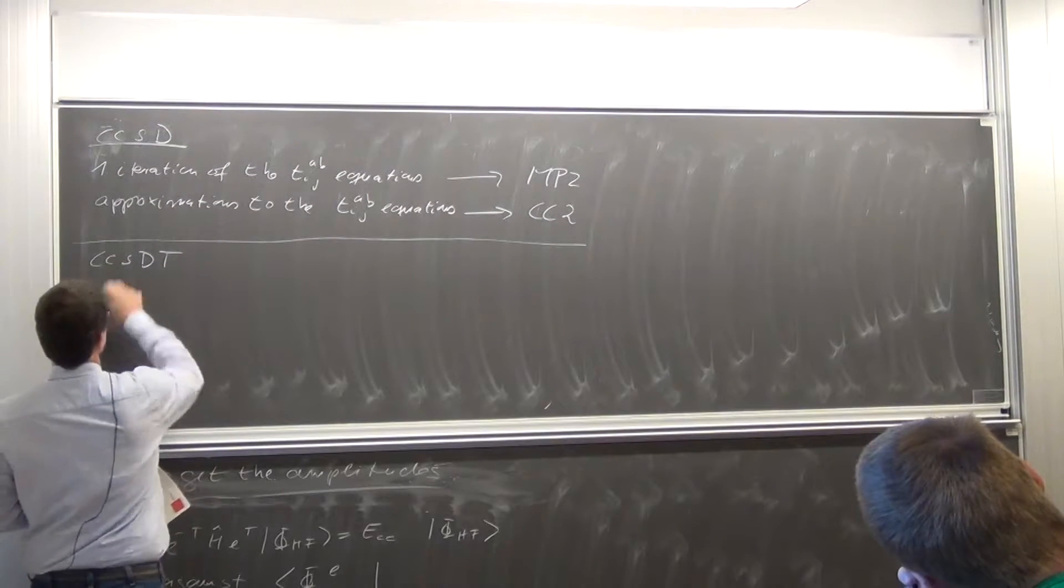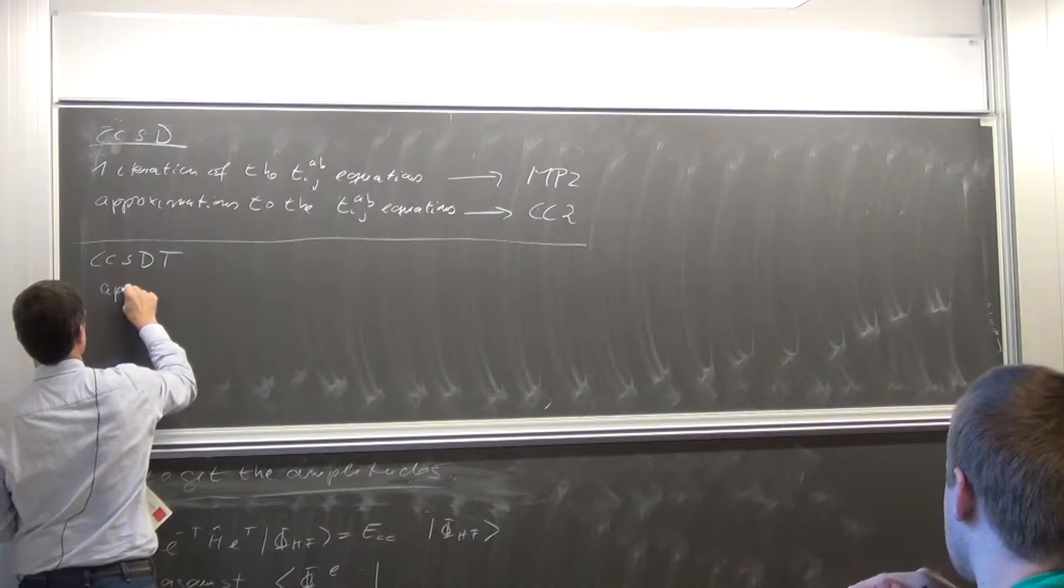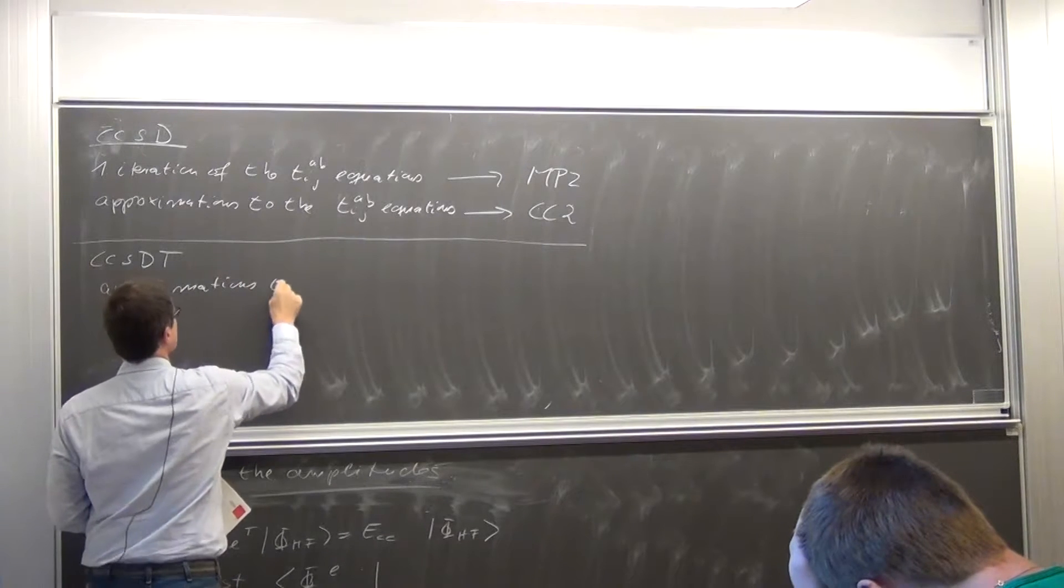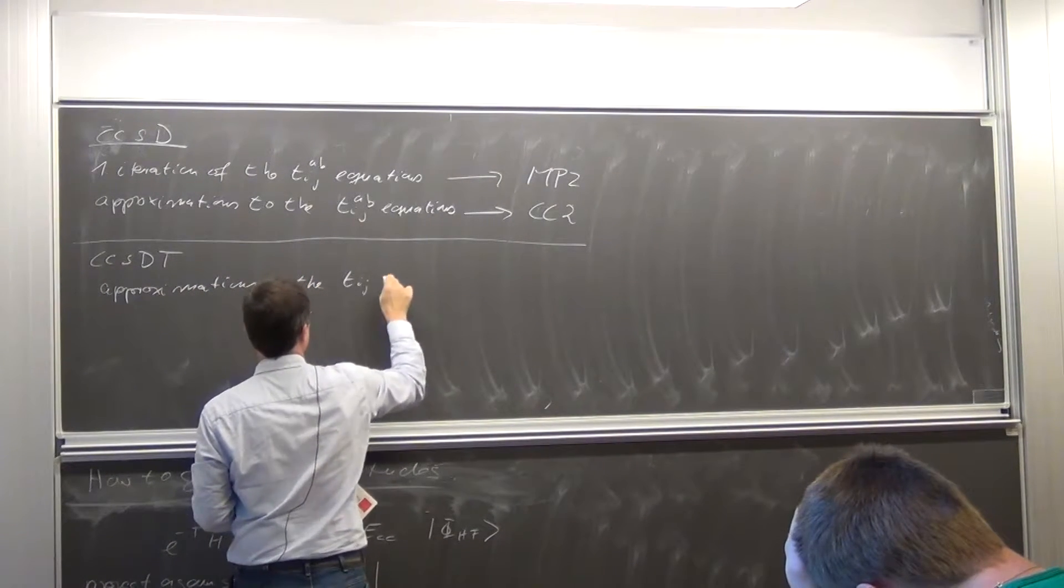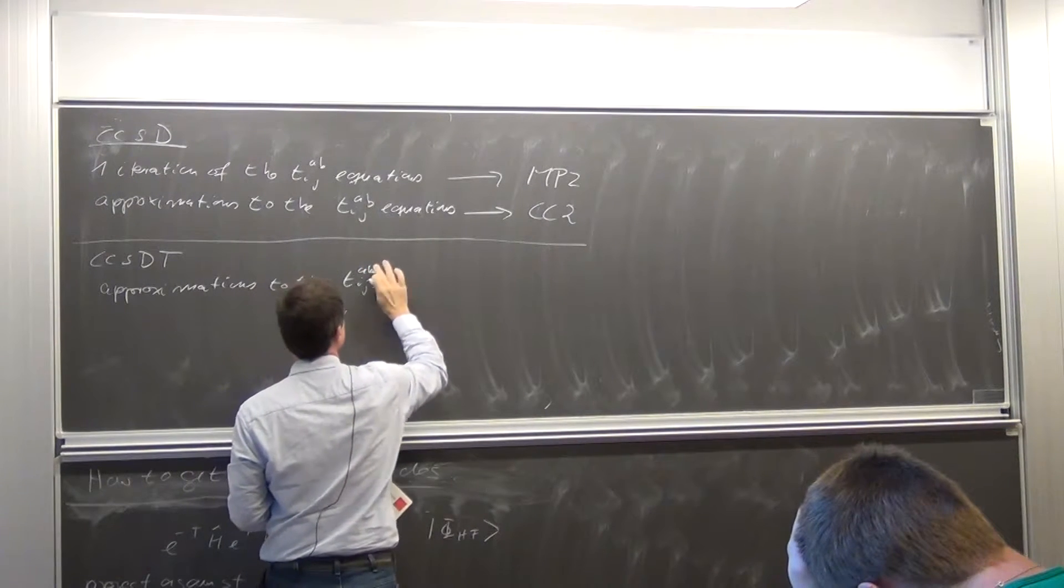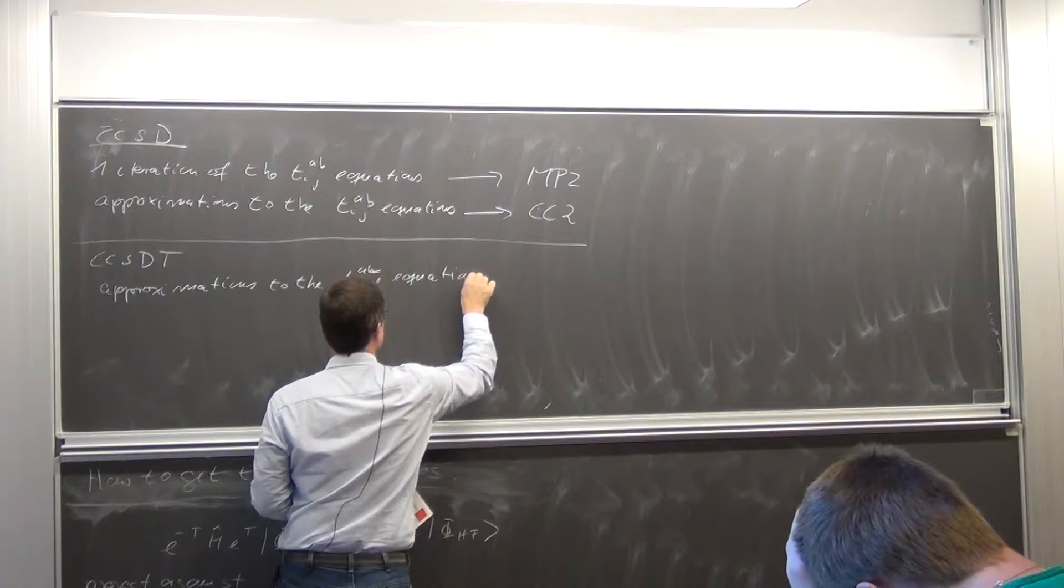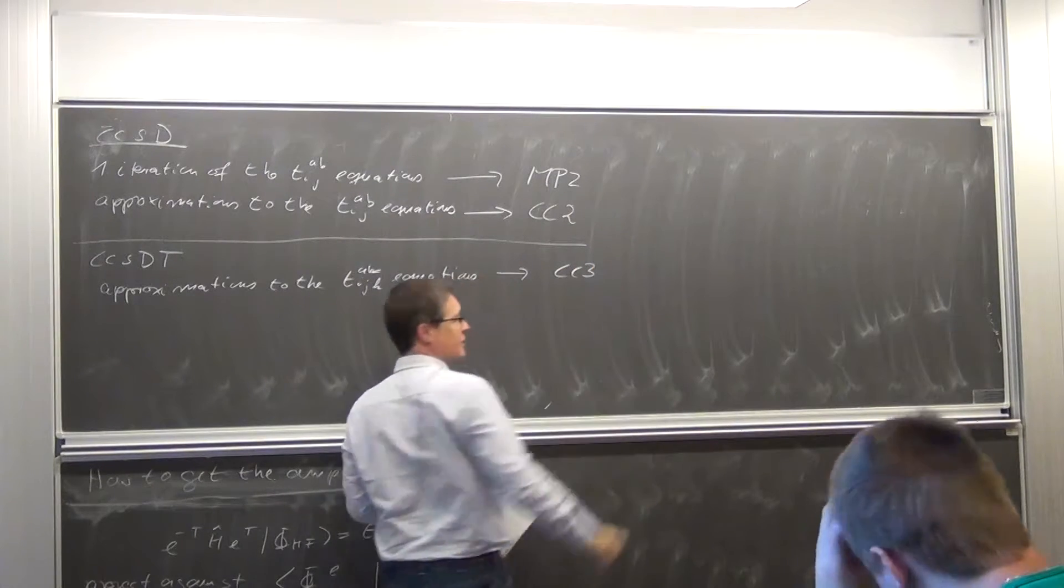So what you do is, there is a similar method where you do approximations to the triple excitations, to the triple equations, the A, B, C equations. And that method then, surprisingly, is called CC3.